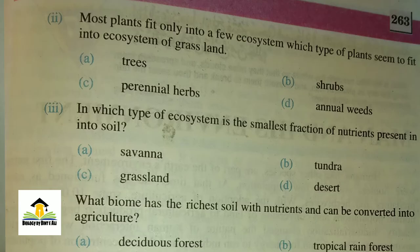MCQ number two: Most plants fit only into a few ecosystems. Which type of plants seem to fit into the ecosystem of grassland? A) trees, B) shrubs, C) perennial herbs, D) annual weeds. The right answer for this MCQ is C, perennial herbs.